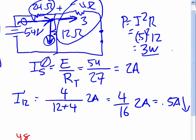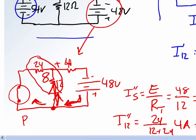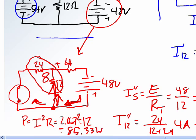So just as an aside here, we want to calculate what that power would have been if there were 2.667 amps. Again, P equals I squared R. It would have been 2.667 squared times 12, which gives us 85.33 watts.